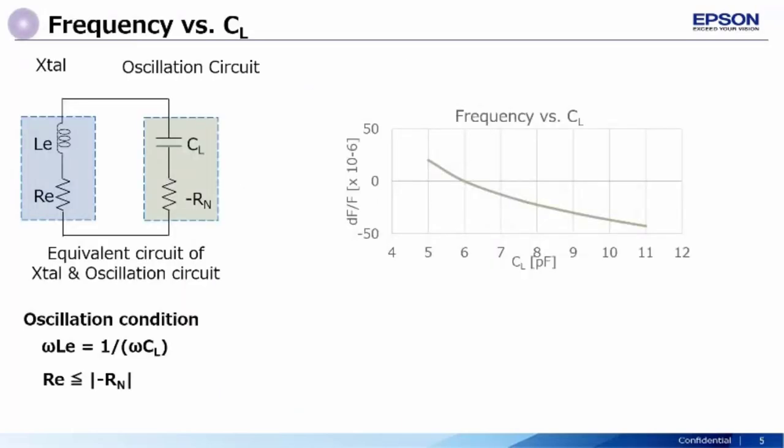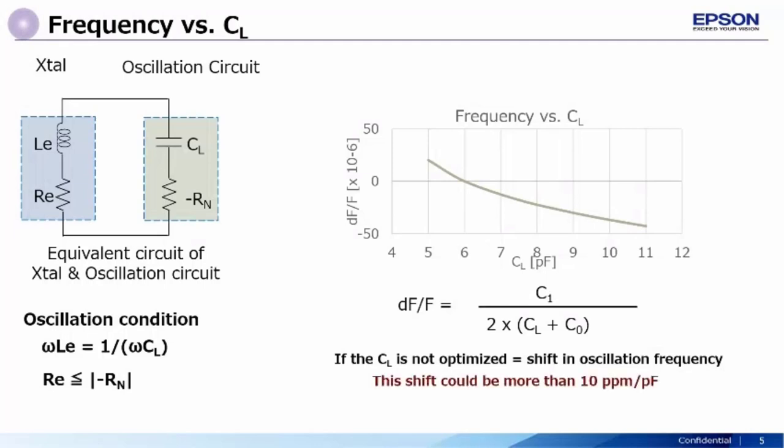First up is the operating frequency of the crystal. The operating frequency is dependent on the load capacitance. The graph shown here depicts the deviation of the operating frequency from its set value with change in the load capacitance. Your crystal manufacturer will specify the value of the load capacitance to be used to achieve the desired operating frequency. Deviating from this value will cause the frequency to shift as well.